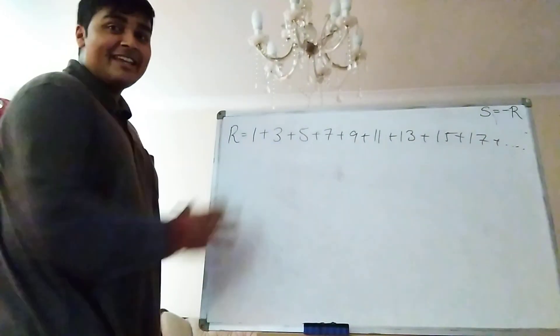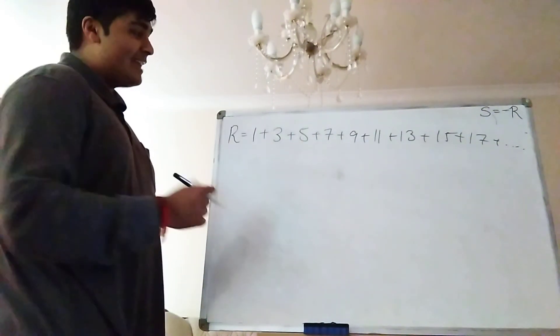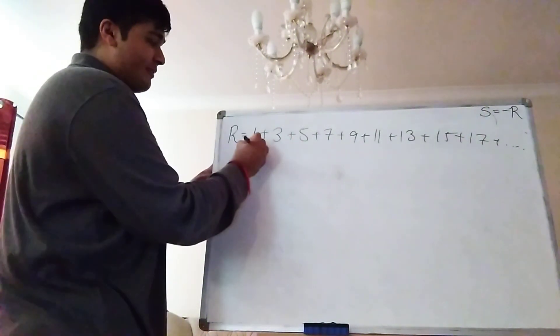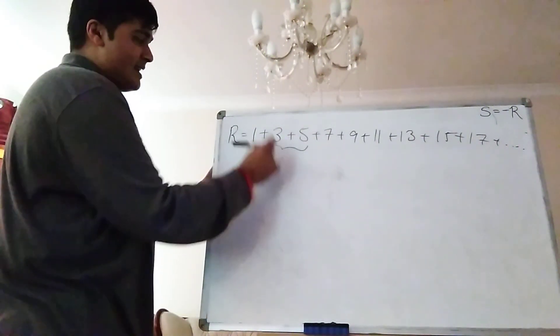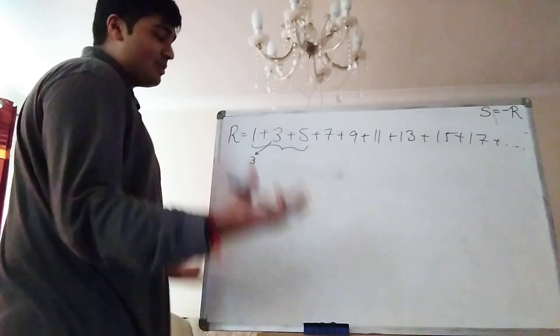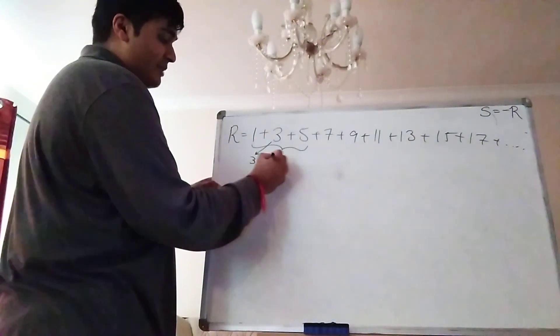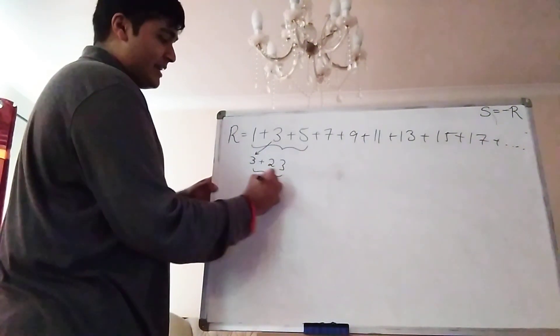How I'm going to evaluate this sum here is I'm going to use a similar technique to what blackpenredpen did in his video. It's by grouping terms. So firstly, if I look at these first three terms here. I'm going to bring the 3 out here. And then what I'm left with is 1 plus 5. Well, 1 plus 5 is 6, but it's also 2 times 3. So it's 3 plus 2 times 3. But that, of course, is just 3 times 3.